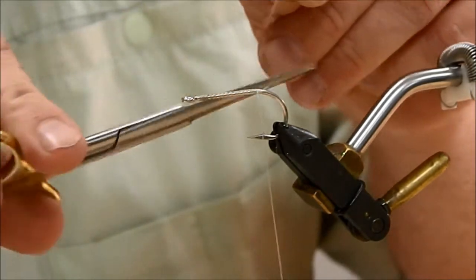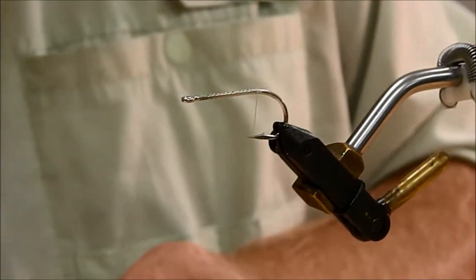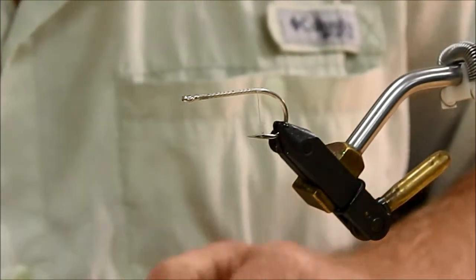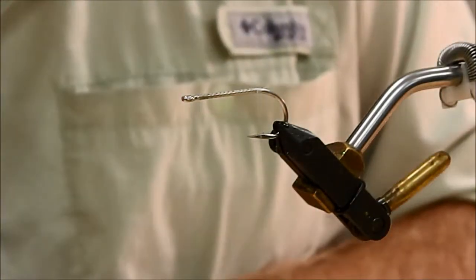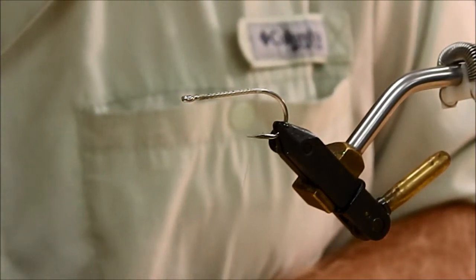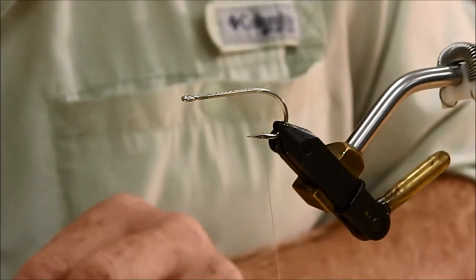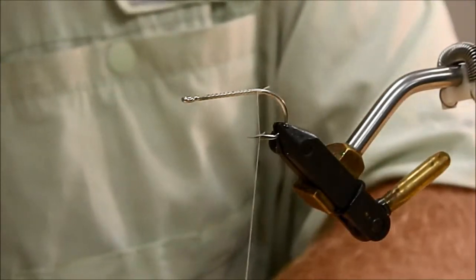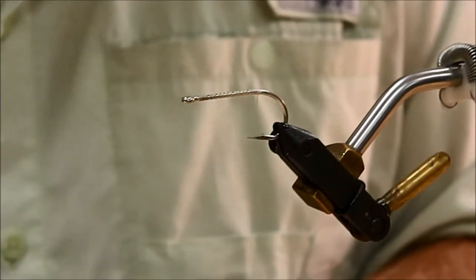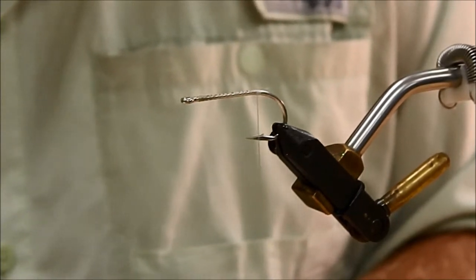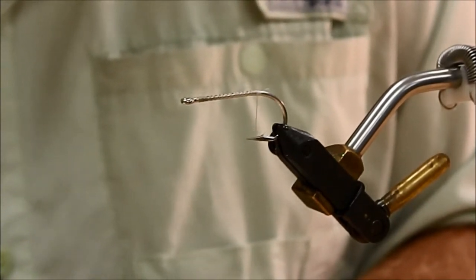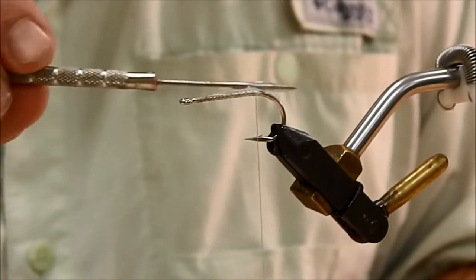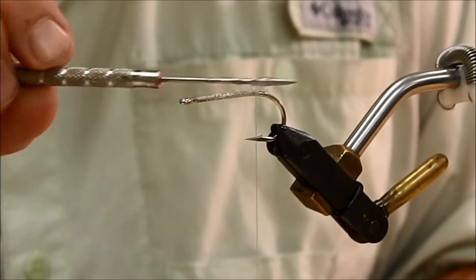And you can go ahead and mix up 5-minute epoxy. A drop of each is all that's really required. Mix that up real good, and put your liberal coat right on top.